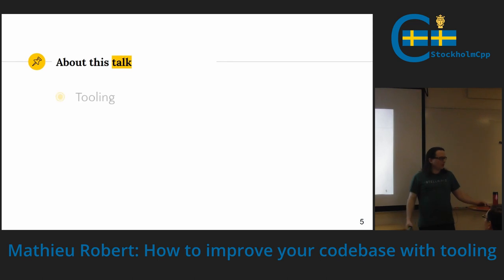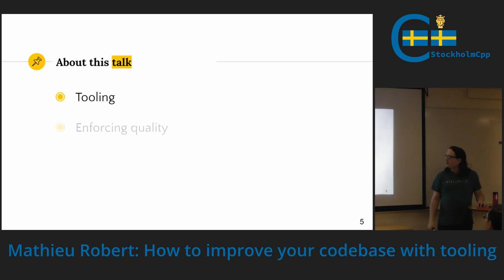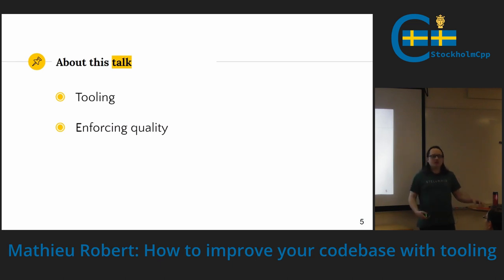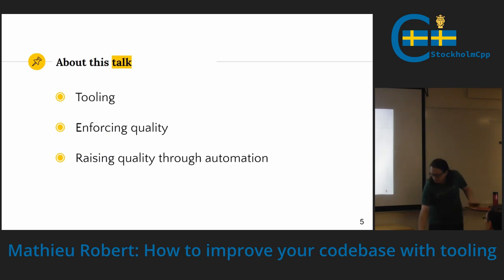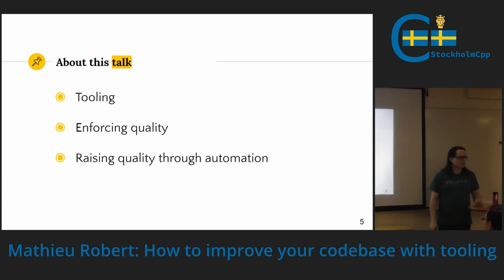What are we going to talk about today? Obviously we're going to talk about tooling — you probably got that from the title. We're going to talk about quality, but more than quality, we're going to talk about enforcing quality, keeping the level of quality the same, not going worse. But keeping as good as you are is only one part of the problem — you also want to raise it, because if the bar is really low, you can keep it there, but that's probably not your objective. You probably want to upgrade it too. And we'll focus on automation, because programmers are lazy — we like to have somebody else do our job but still get paid.